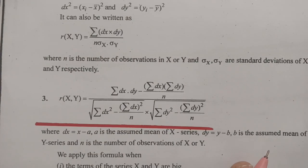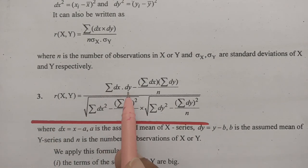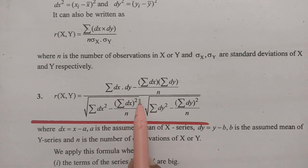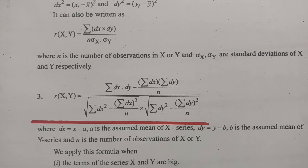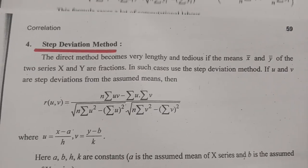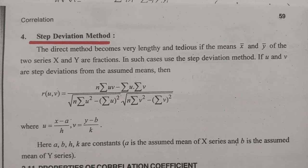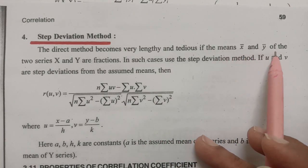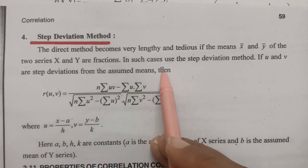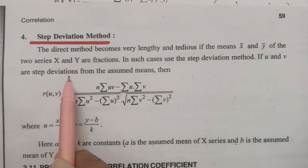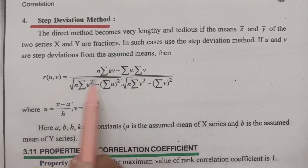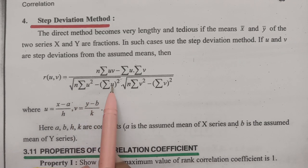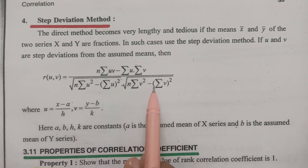A third formula for covariance of (X, Y) is: [Σ(dx × dy) − (Σdx × Σdy)/n] / √[Σdx² − (Σdx)²/n] × √[Σdy² − (Σdy)²/n]. The fourth formula is the step deviation method. The direct method becomes very lengthy and tedious if the means x̄ and ȳ of the two series are fractions. In such cases, use the step deviation method. If u and v are the step deviations from the assumed means, then gamma(u, v) = [n·Σuv − Σu·Σv] / √[n·Σu² − (Σu)²] × √[n·Σv² − (Σv)²].